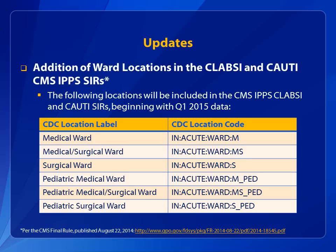The requirement to report from ward locations is limited to those locations that are mapped as or defined as CDC adult and pediatric medical, surgical, and med-surg wards listed in the table on this slide. Therefore, any unit that meets the definition of and is mapped as a specific type that is not an ICU, NICU, or one of the six wards listed above is not required for CMS IPPS reporting in 2015. An example would be locations mapped as an orthopedic ward, telemetry ward, or step-down unit.